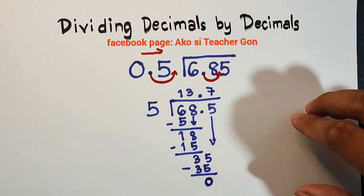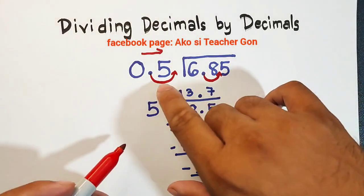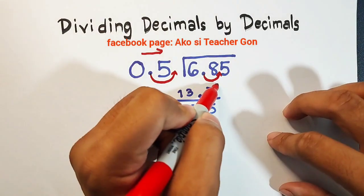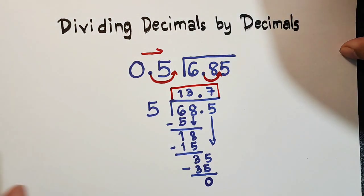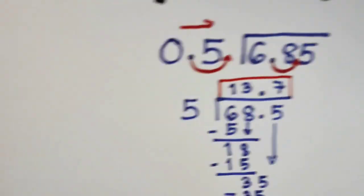Therefore, in dividing 6.85 by 0.5, the quotient is 13.7. Now, for you to be familiarized with the steps, let us have another example.